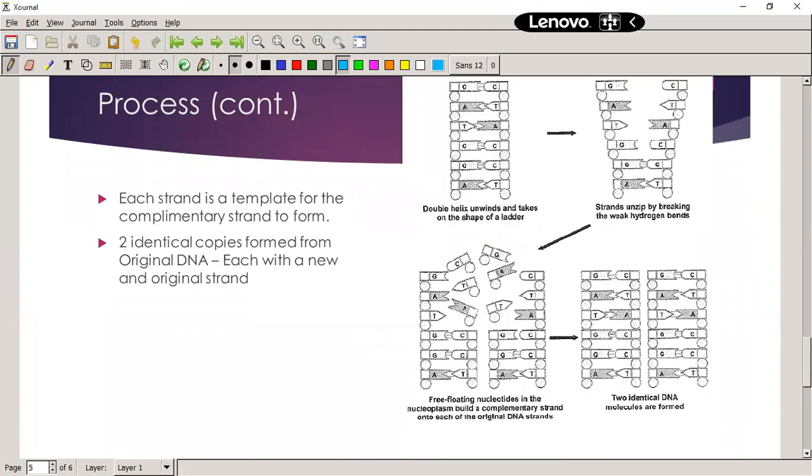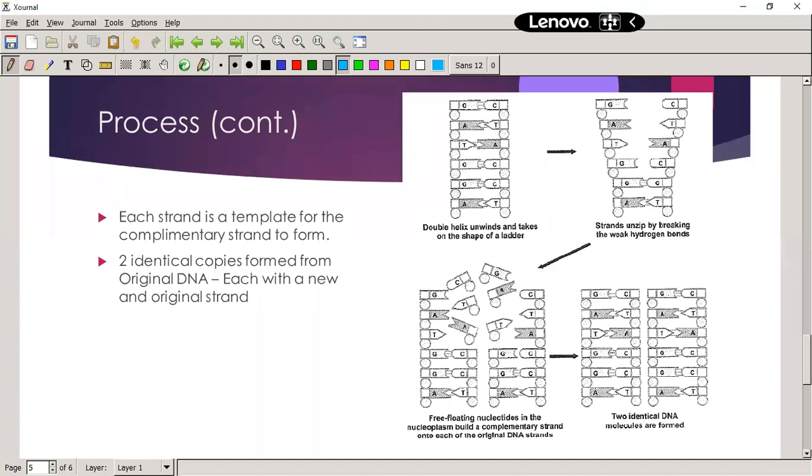Okay, so each strand acts as a template to form the complementary strand. And here's a nice diagram, this is from the answer series book. Okay, so there the double helix unwinds and takes and forms a ladder shape. It unzips, so the hydrogen bonds break and it unzips. Free nucleotides come in and complementary sit on top of the existing strings, and then we get two strings that are the same as the original string.